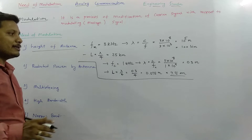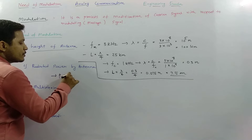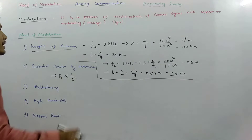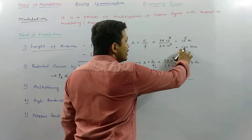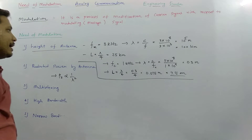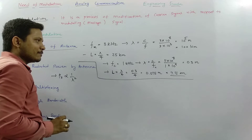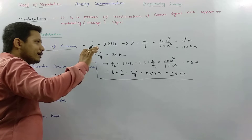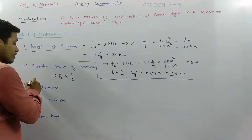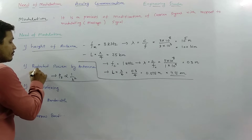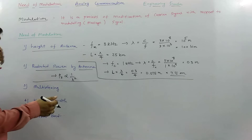Modulation also affects the radiated power of the antenna. Radiated power is proportional to 1/λ². For the low frequency modulating signal, wavelength is very high — in the hundreds of kilometers. After modulation with a 1 GHz carrier, the wavelength drops to 0.3 meters. As wavelength decreases, radiated power increases by the factor 1/λ², which is a very important advantage achieved through modulation.